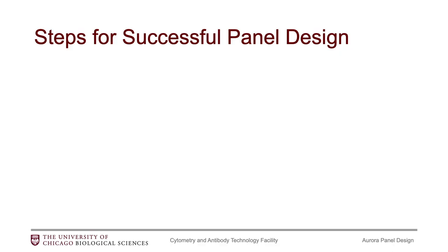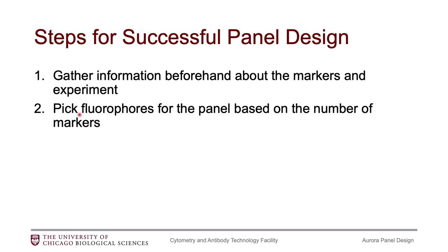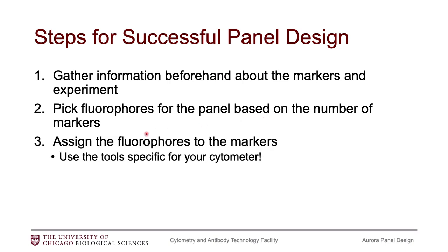There are several steps we need to go through in order to get a successful panel. First, we need to gather information about the markers that we want to put in our experiment. Once we've decided on that, then we're going to need to pick fluorophores based on the number of markers we have. Then the third step is probably the most difficult one — you need to pair the fluorophores to the markers. There's a lot of strategy in doing that and I'll talk about the tools that are specific to the Aurora. Finally, we do need to test our panel out on actual cells to determine if we were successful. I'm not going to talk about this last step in this particular video, but you can find slides on our website and I will work on making a video for that as well.